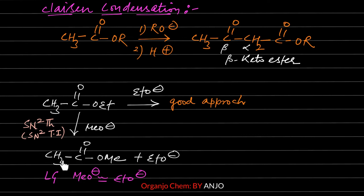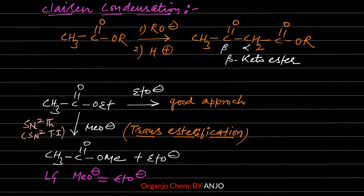In Claisen condensation, if the base and the ester's leaving group are different, both types of esters will be present in the reaction mixture. Both will show individual Claisen condensation, which will reduce yield and increase the possibility of impurities. That is why in Claisen condensation, the base used matches the leaving group of the ester.